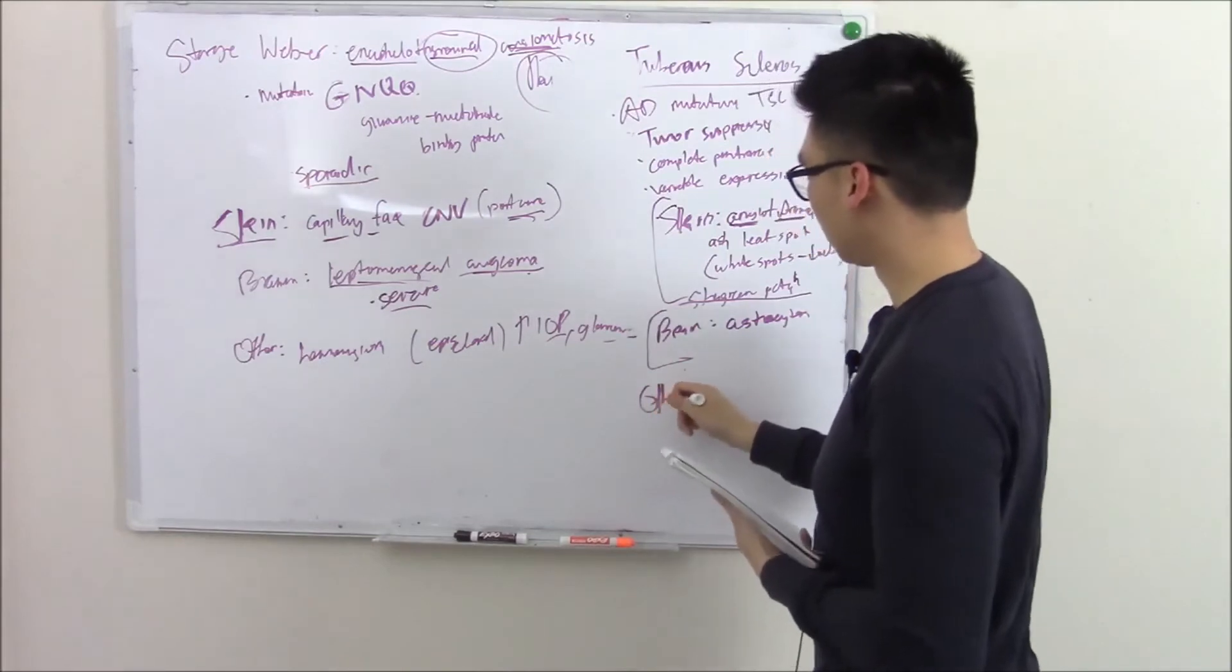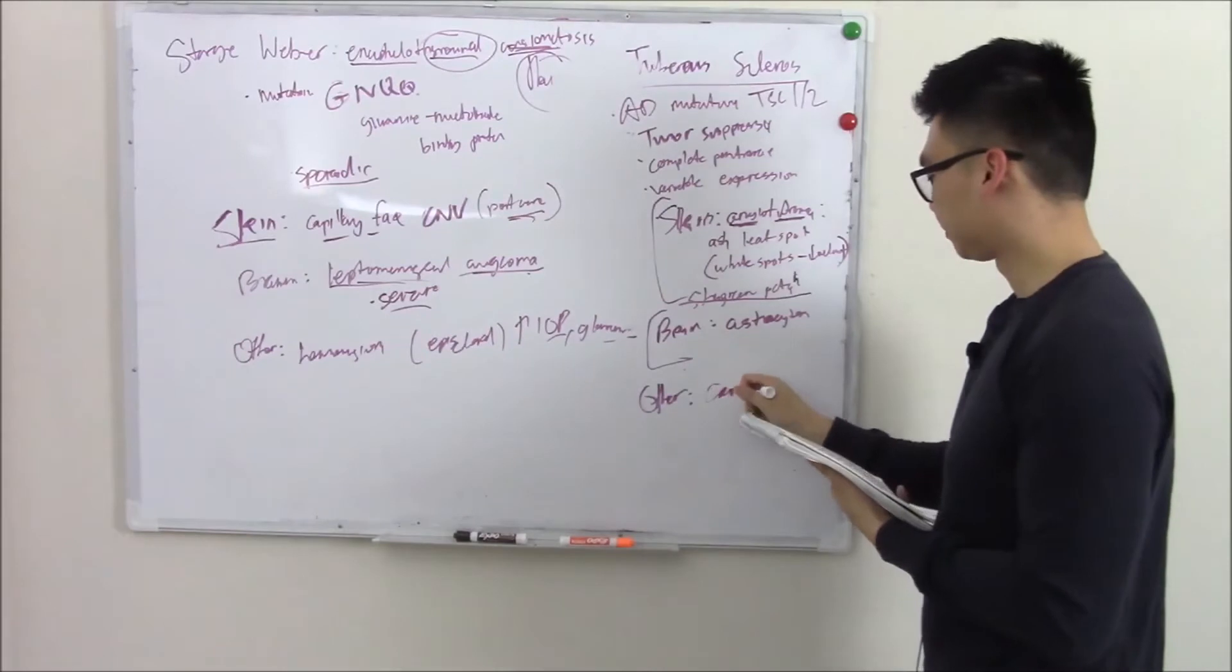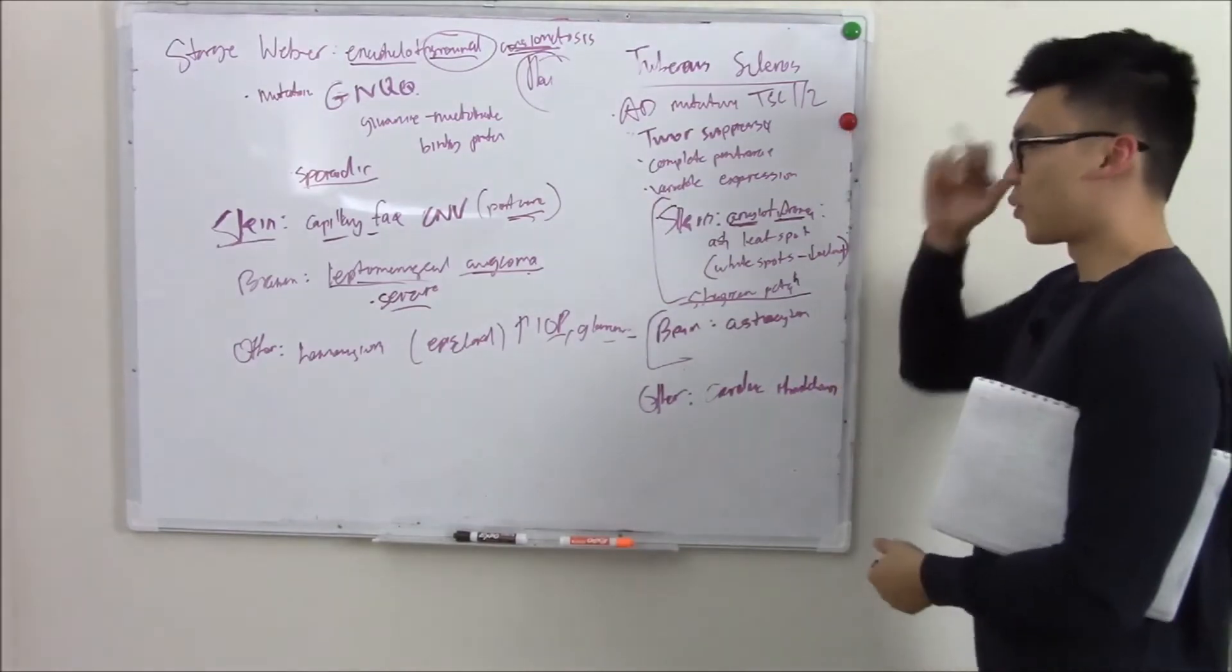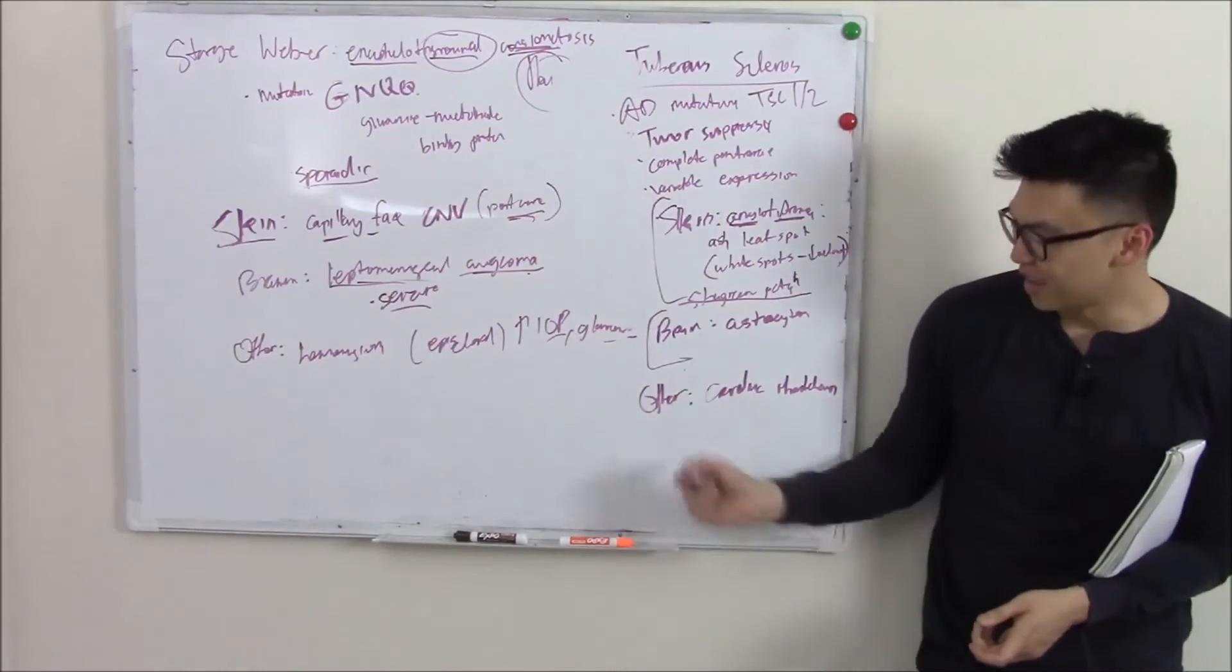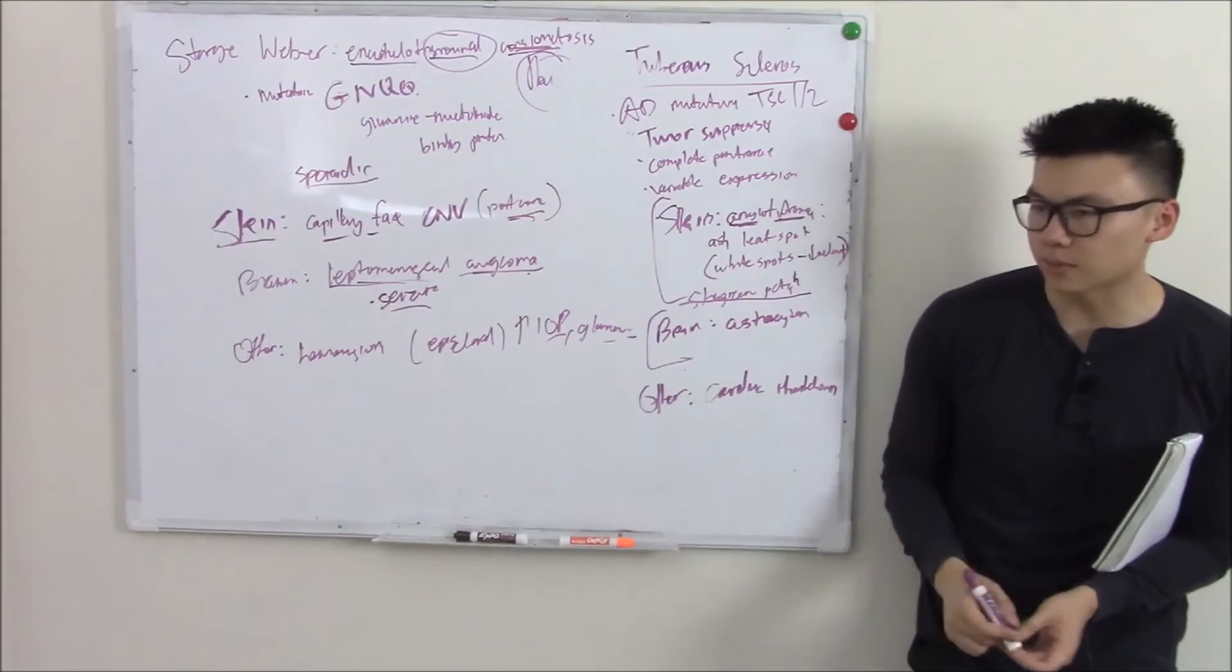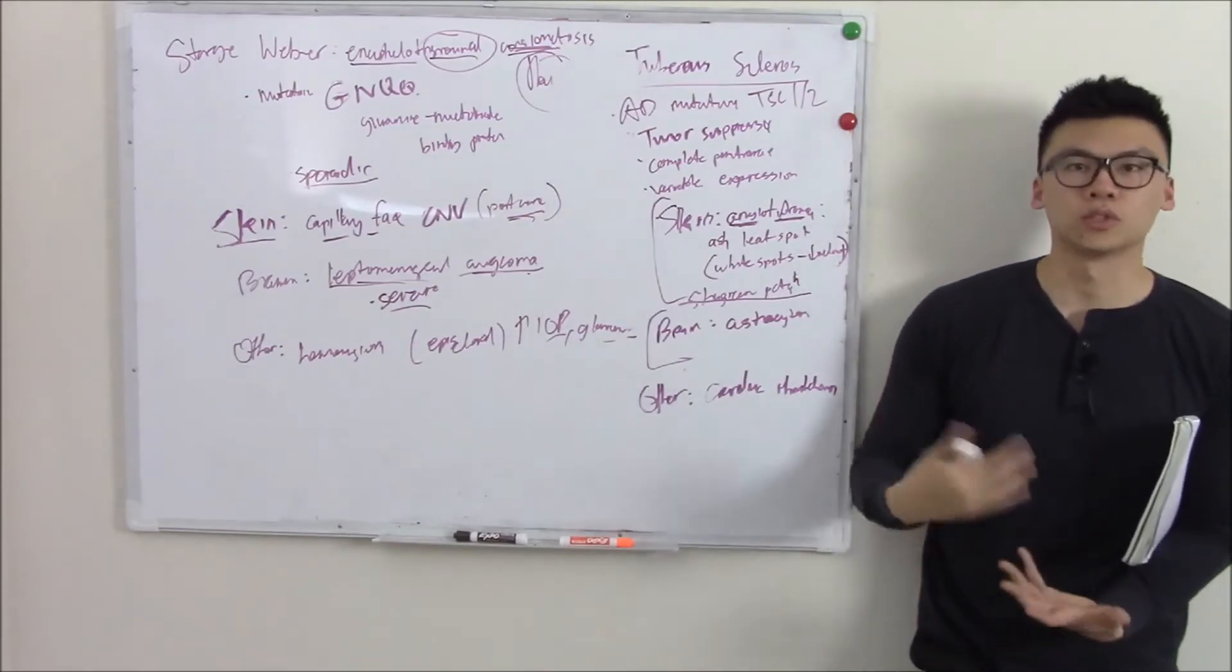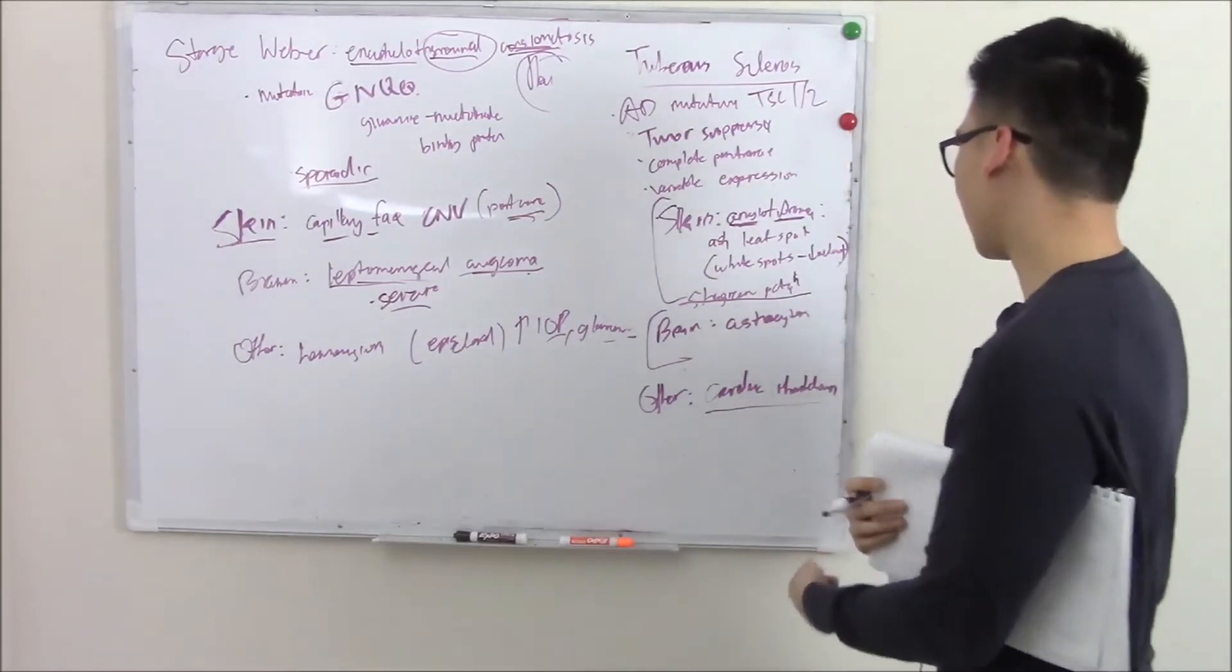How about the other manifestations? You can have other tumors. You can have cardiac rhabdomyoma. If you remember way back when you first started medical school with the cardiac block, we talked about cardiac rhabdomyoma. That was our first block together. We said that was the most common tumor in kids and associated with tuberous sclerosis. We're bringing it all back together.